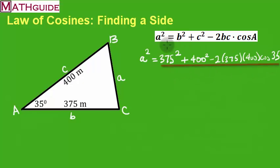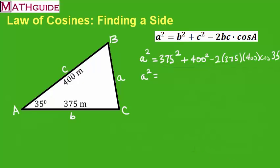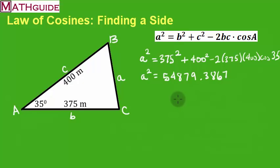Now we're going to take all of this information and place it right into a calculator. Most calculators nowadays — like the TI Nspire — you just plug it in exactly as you see it. I plugged it in and I'm getting a large number: 54879.3867. So that's what A squared equals.